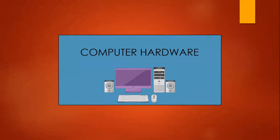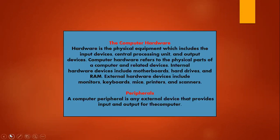Hello, my name is Edgardo Baguio and this time we're going to talk about computer hardware. Hardware is a physical equipment which includes the input devices, central processing unit, and output devices. Computer hardware refers to the physical parts of a computer and related devices.